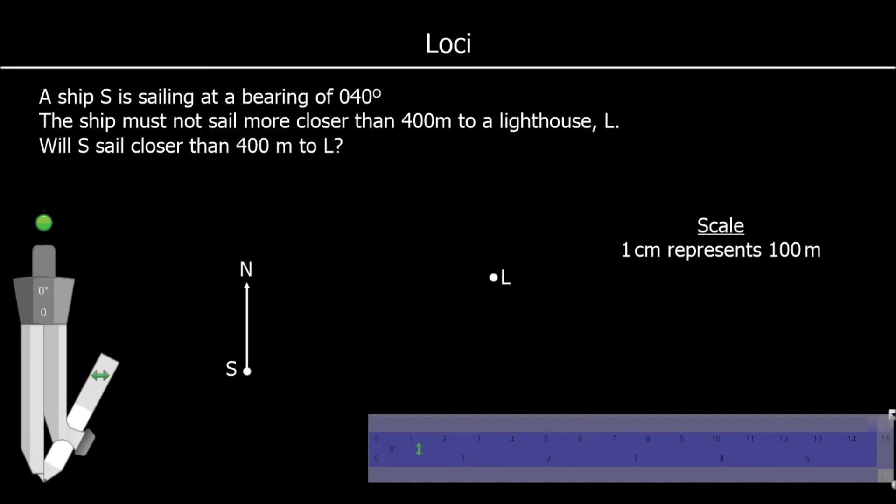And another question. This time we've got a ship sailing at a bearing of 40 degrees. The ship must not sail closer than 400 meters to the lighthouse L. Will it sail closer? So 1 cm is 100 meters. So 400 meters divided by 100 is 4 cm.